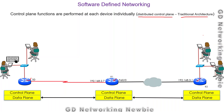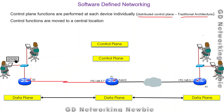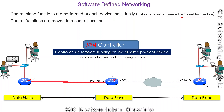In software defined networking, the control plane functions are moved to a central location. All control functions are taken from individual devices and placed in a central entity called a controller — specifically an SDN controller. This controller centrally manages all the networking devices. The controller is essentially software, which can run on a virtual machine, a specific physical device, or even in the cloud.